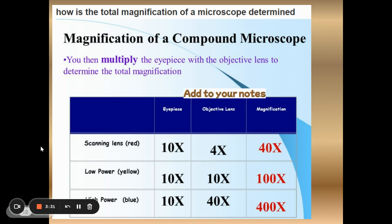So one of the things that you need to add to your notes is how you determine total magnification. How you determine total magnification is you multiply the power of the eyepiece with the power of the objective lens. So you can see in the first one the scanning lens. The eyepiece is a 10x. Multiply that by 4 which is the power of the scanning lens. And you end up with a total magnification of 40x.